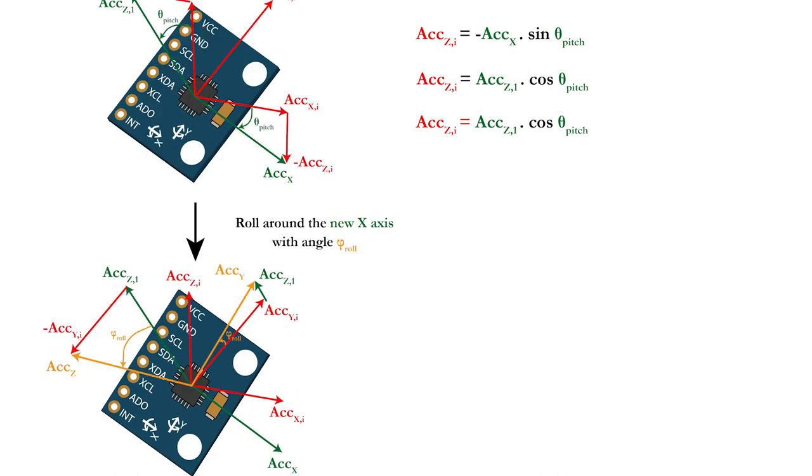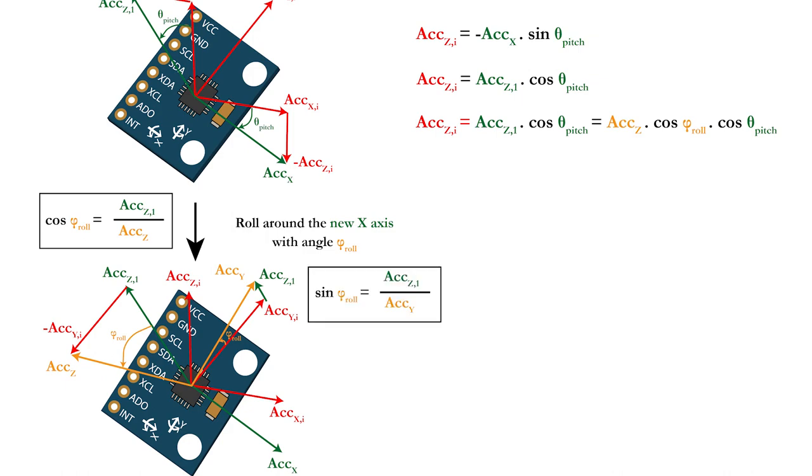Doing a second transformation by rolling your drone around the new X axis with the angle theta roll will allow you to further expand the equations with the roll component. Now you can relate the cosine of the roll angle with the Z axis of the first transformation in green and the new accelerometer Z axis in yellow. Repeat this with the sine of the roll angle that can be related to the Z axis of the first transformation in green and the new accelerometer Y axis in yellow.